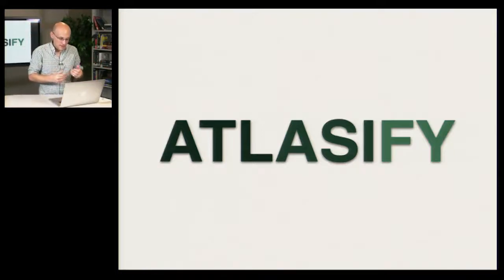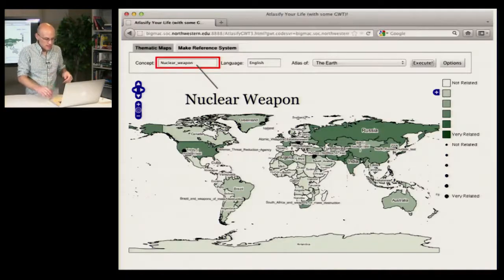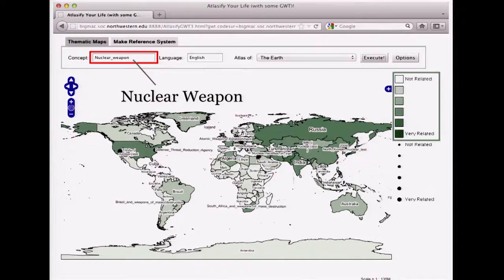So without further ado, here is Atlasify showing the results of a query for nuclear weapon. Now in this map, like most choropleth maps, or like all choropleth maps done well here, the dark green or the dark color indicates areas that are very related to nuclear weapons, and the lighter green areas indicate areas that are less related. So in this case, we have a quantitative spatial attribute, relatedness, and we're visualizing it using the appropriate quantitative choropleth map strategies.